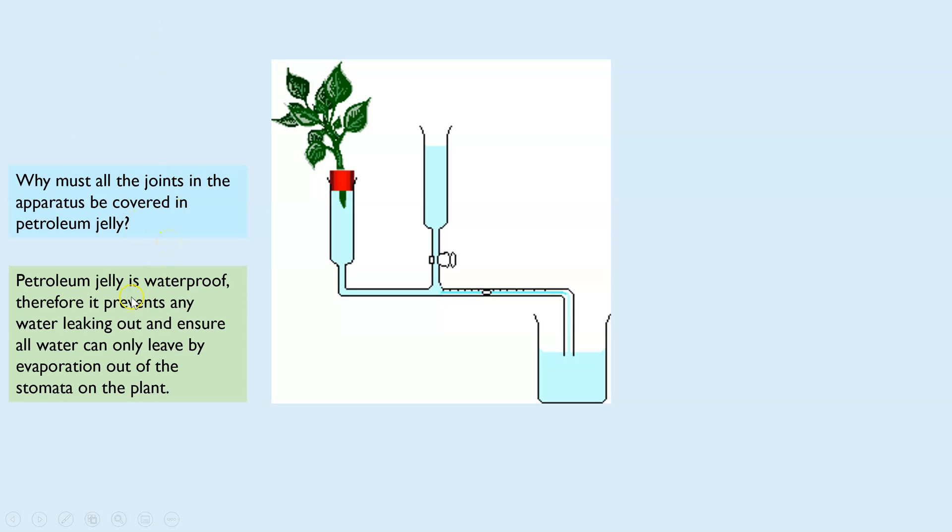The next one: why must all the joints in the apparatus be covered in petroleum jelly? First thing is just pointing out petroleum jelly is waterproof. By covering all of these joints in this waterproof substance, it makes sure that no air can be introduced into the apparatus, but also makes sure that no water can leak out, which would impact your accuracy of your estimate of water taken up.